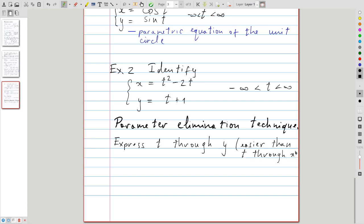Because here we have a linear equation, whereas for x we have a quadratic equation. So of course, using the second equation gives that t is equal to y minus 1.